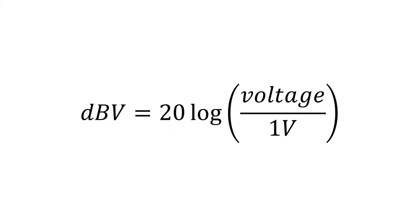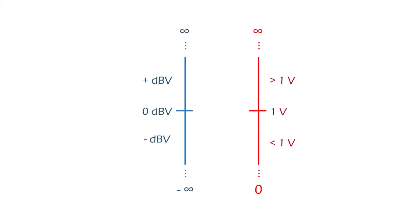Decibels volt are similar to decibels SPL, only that they are referenced to 1 volt. Therefore, 0 decibels volt equals 1 volt, positive decibels are greater than 1 volt, and negative decibels are under 1 volt.